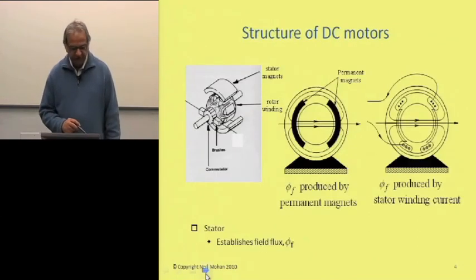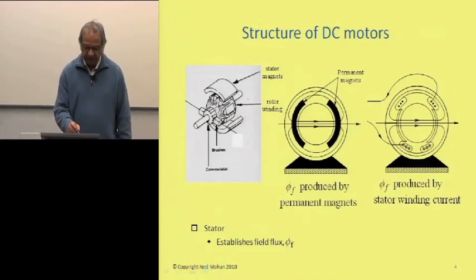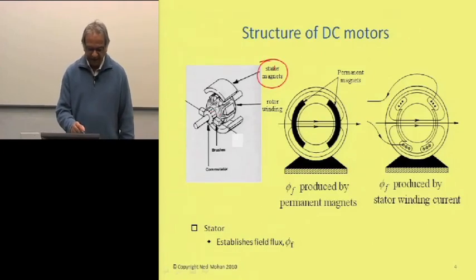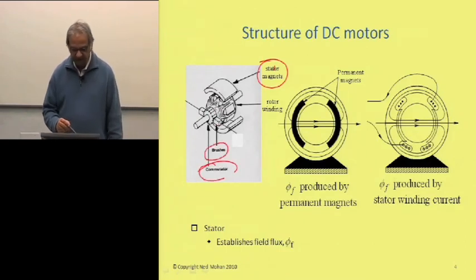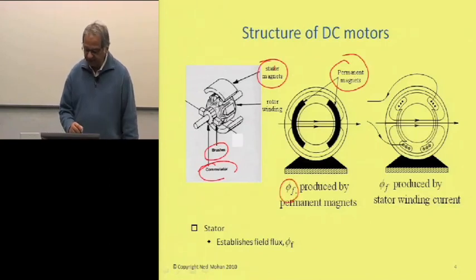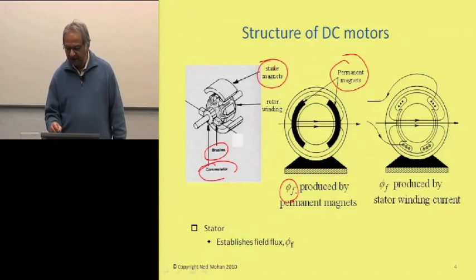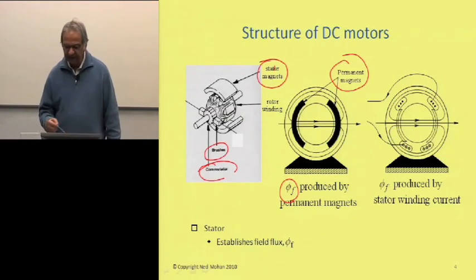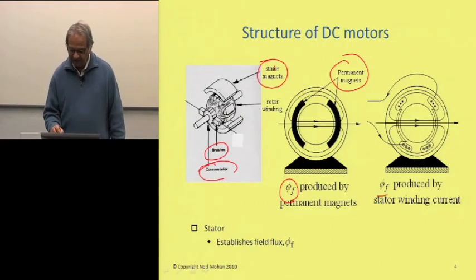You can see here the structure in an exploded view. We have permanent magnets on the stator, and on the rotor we have what is called an armature winding, and commutators and brushes. As far as the stator is concerned, it may have permanent magnets which produce the field flux phi sub f, or this field flux could be produced by having a winding on the stator. There are two poles and a stator winding through which we pass a DC current, which produces this field flux phi sub f.